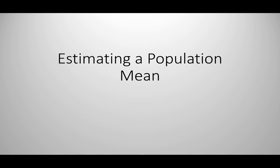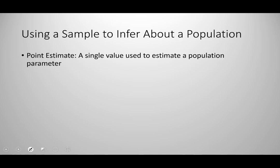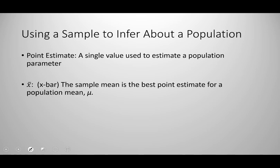In this video we're going to look at the process for estimating the population mean. A point estimate is a single value used to estimate a population parameter. When talking about a population mean, the best point estimate we can get is our sample mean, which is X bar.